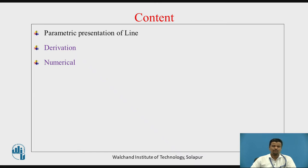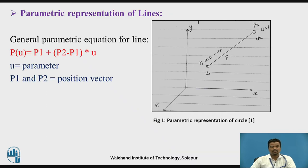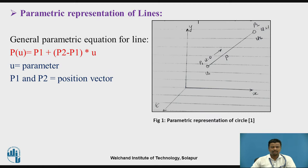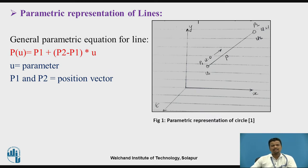First, you will learn the parametric representation of a line. We will see the derivation and some numericals. A line is an analytical curve. Examples of analytical curves include circle, arc, triangle, rectangle, and different types of polygons.